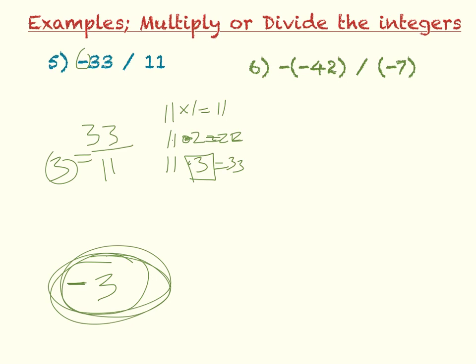And the last one, example 6, the number of negative signs is 1, 2, 3. That is an odd number of negative signs, so that means my answer is going to be negative. So I'm just going to look at 42 divided by 7.